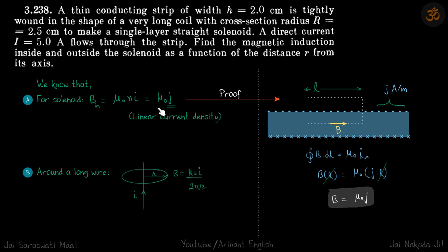Let's quickly see the proof that B inside a solenoid is μ₀j. We use Ampere's law on this loop and B here inside the solenoid will be uniform with value B. Only on this path we will have some value of B·dL. On these three paths, B·dL is 0.